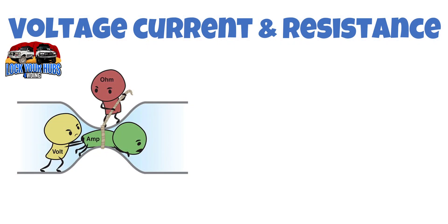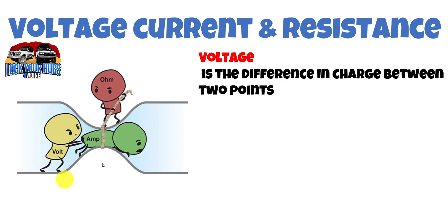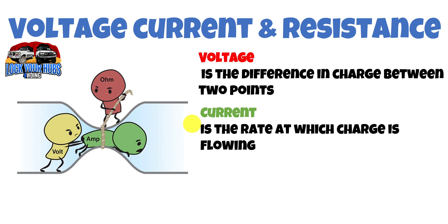So you can think of this as like a garden hose. Now your voltage is the difference in charge between two points. Well think of that as the water pressure in the hose. Now current is the rate at which the charge is flowing or with the analogy with the hose, the diameter of that hose.